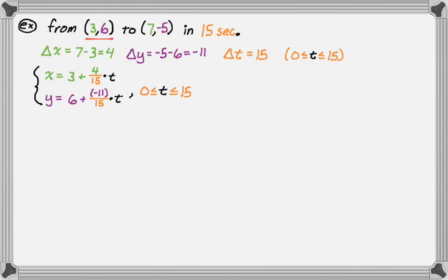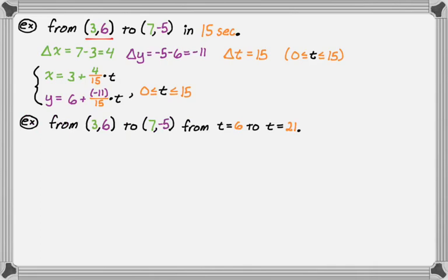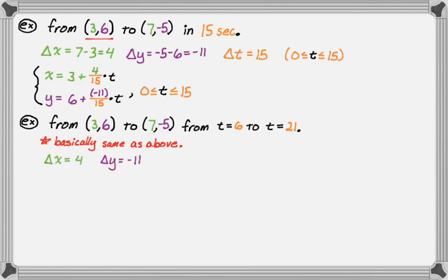Now I'll take basically the same problem and change it a little. Same initial point, same terminal point, but this time we go from t equals 6 to t equals 21. All of our deltas are going to be the same: delta x is 7 minus 3 = 4, delta y is -5 minus 6 = -11, and delta t is 21 minus 6 = 15. So it's essentially the same, but t goes from 6 to 21, which will change our equations a little.